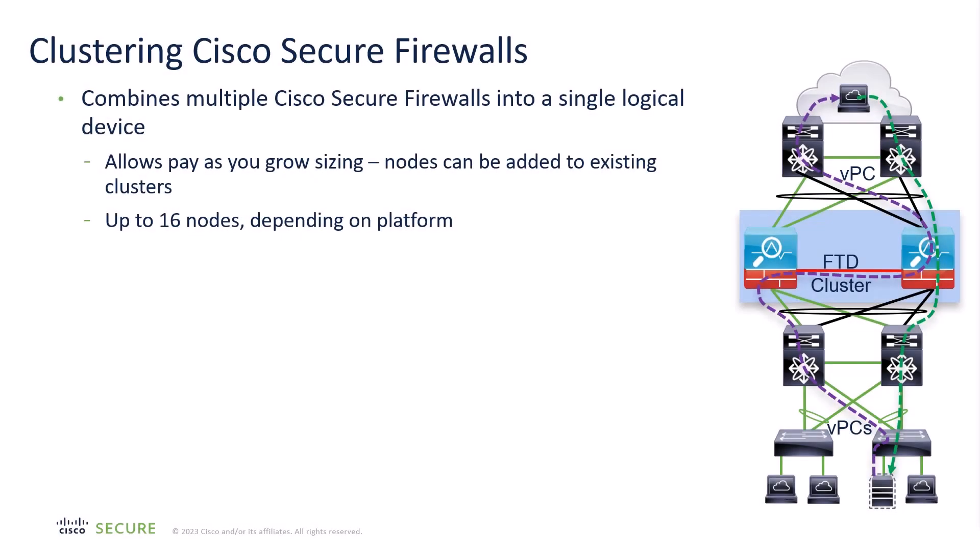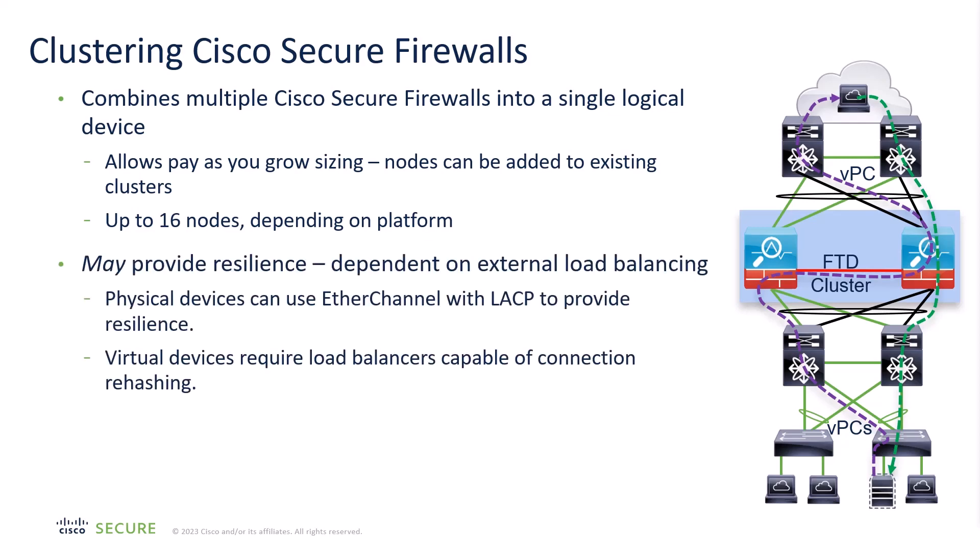Clustering is a key capability of the Cisco Secure Firewall. It allows combining multiple Cisco Secure Firewalls into a single logical device. This allows you to pay as you grow, adding nodes as your traffic needs increase — up to 16 nodes, depending upon the platform. It does offer resilience for certain load balancing solutions. For physical devices, you typically use EtherChannel, which provides resilience at the connection level because of replication of the connection state within the cluster.